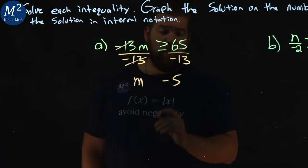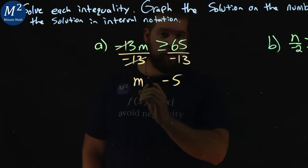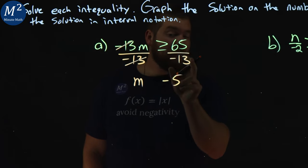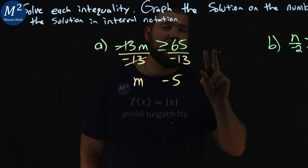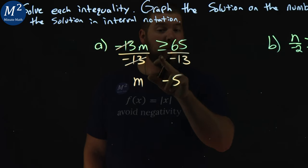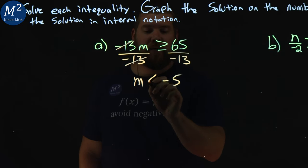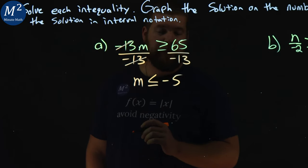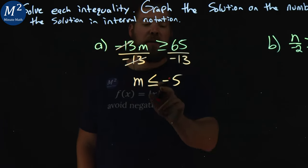But be careful with the inequality. One of our rules with inequalities is if we multiply or divide by a negative number over an inequality, the sign switches. So greater than or equal to becomes less than or equal to. That's the tricky spot here. Now m is less than or equal to negative 5.